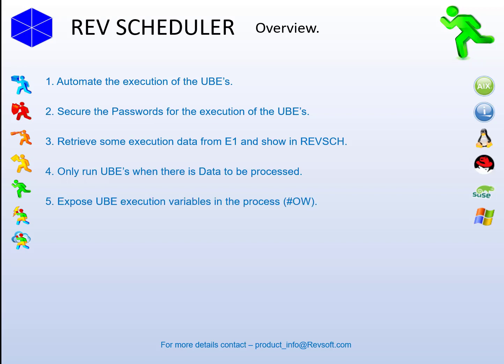The next task was, now that we have the UBE running, why not expose the execution data as variables so that the RevScheduler scripts could use it in the same job — like the job number, process ID, report version, etc. The next task was that some UBEs generate PDFs. So why not run the UBE, then read the PDF immediately to get the results and check if there's any issues — in the same job that you ran the UBE, you can check the PDF for any issue and report them immediately after the UBE has been executed, all in the one job.